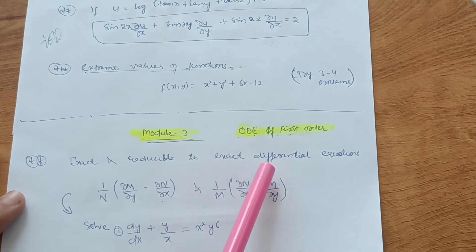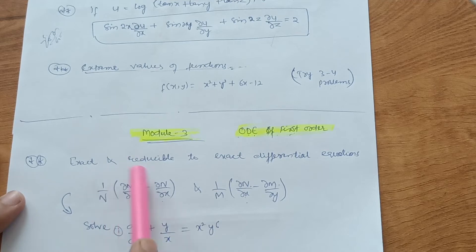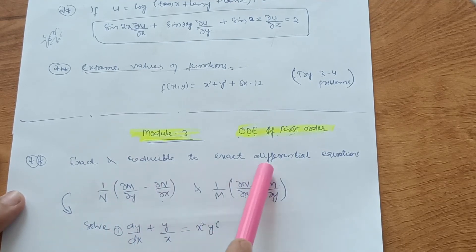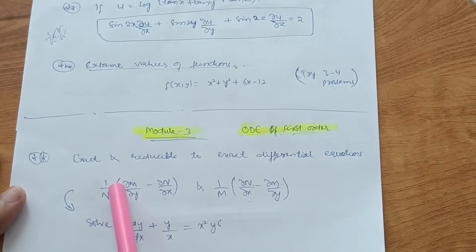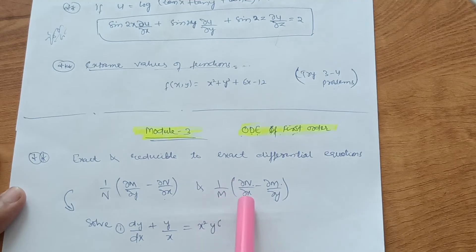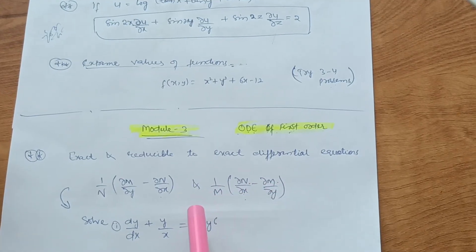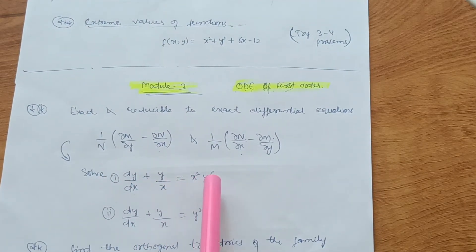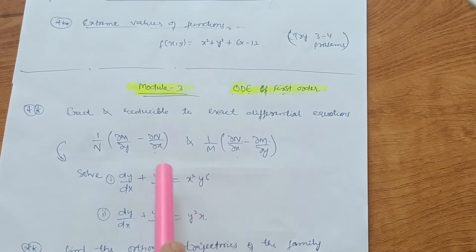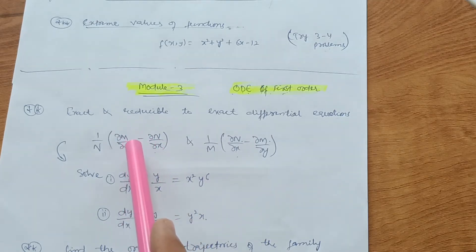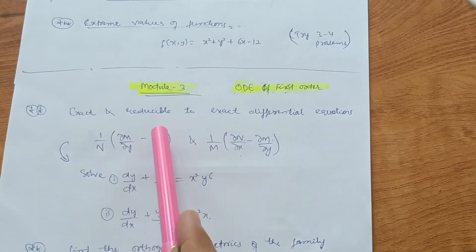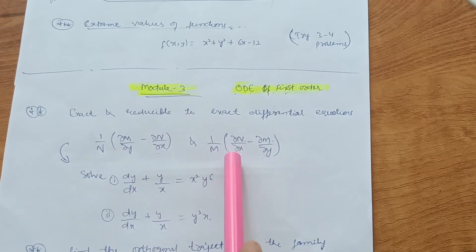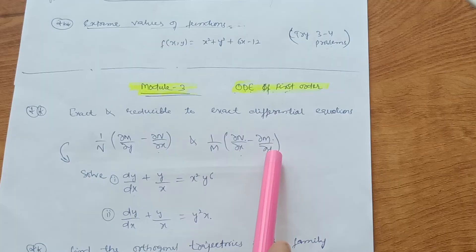Module 3 is Ordinary Differential Equations of the First Order — it's a very simple module. Some simple concepts are there like exact and reducible-to-exact differential equations. The formulas are: (1/N)(∂M/∂y − ∂N/∂x) and (1/M)(∂N/∂x − ∂M/∂y). For example, solve dy/dx + y/x = x²y⁶. You put the equation in the form of M and N, then differentiate M with respect to y and N with respect to x.